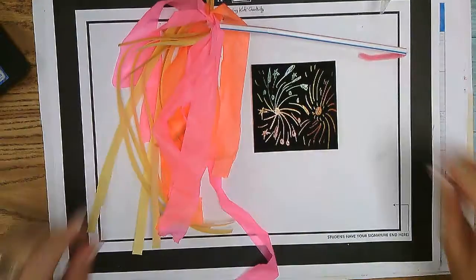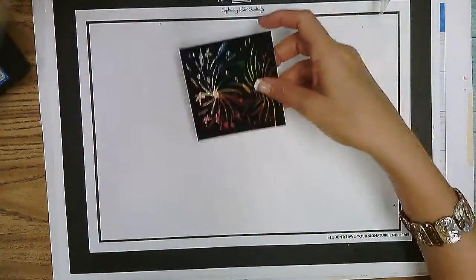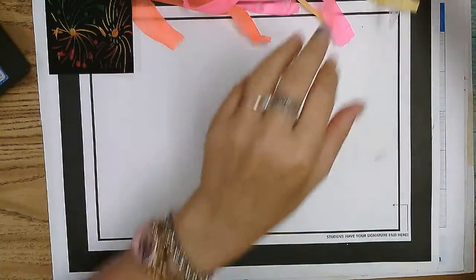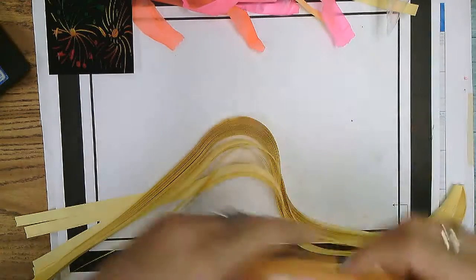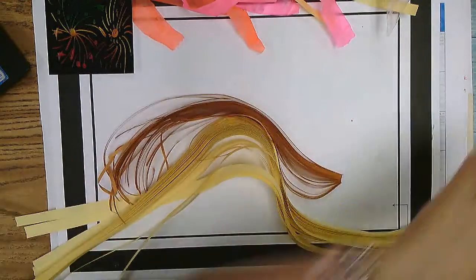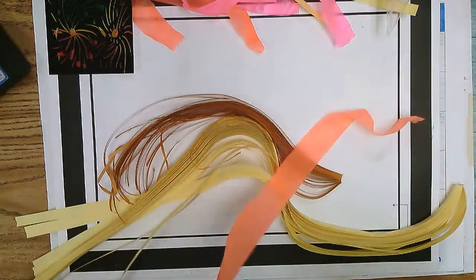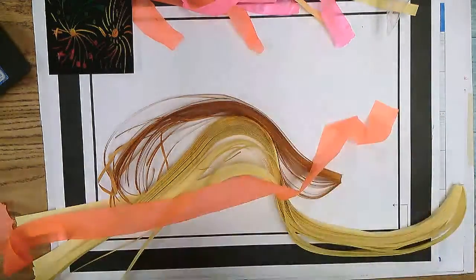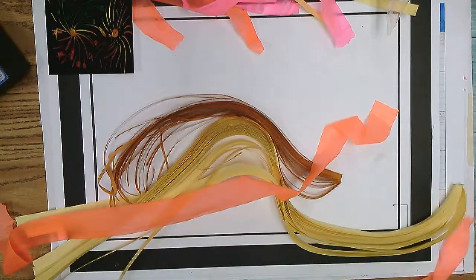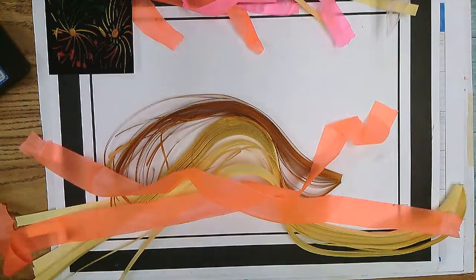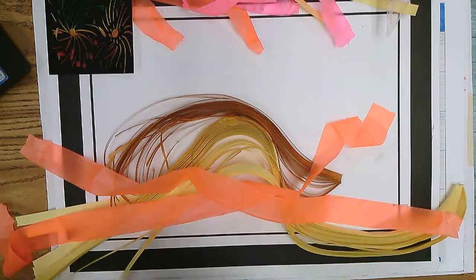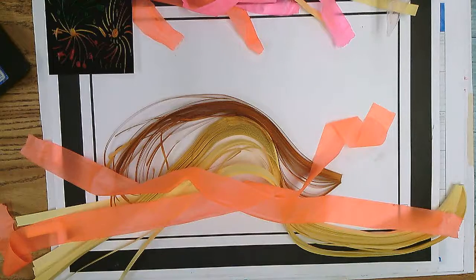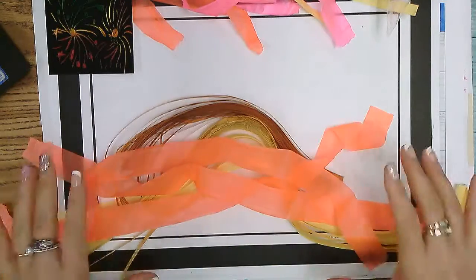So first thing that we're going to need is some cutouts of paper. These are already pre-cut for us so we're going to use a few of these, and also these neon, they're actually glow in the dark. So glow in the dark tapes, fluorescent tapes, and you're going to put them together nicely in a very easy way.